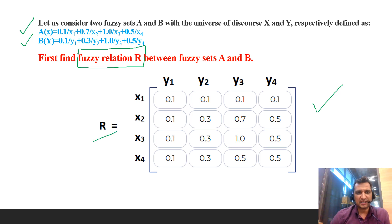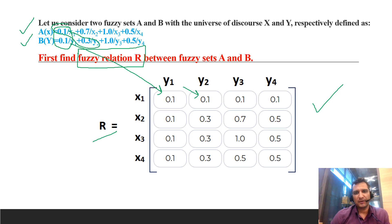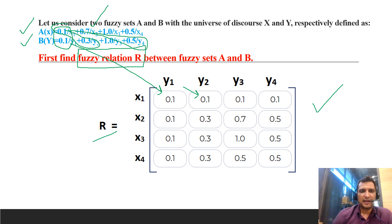For x1 element paired with elements of B: 0.1 and 0.1 — minimum is 0.1; 0.1 and 0.3 — minimum is 0.1; 0.1 and 1 — minimum is 0.1; 0.1 and 0.5 — minimum is 0.1. Then we consider x2 element and pair it with all elements of fuzzy set B. In this way we find the relationship between A and B, which is the fuzzy relationship R.